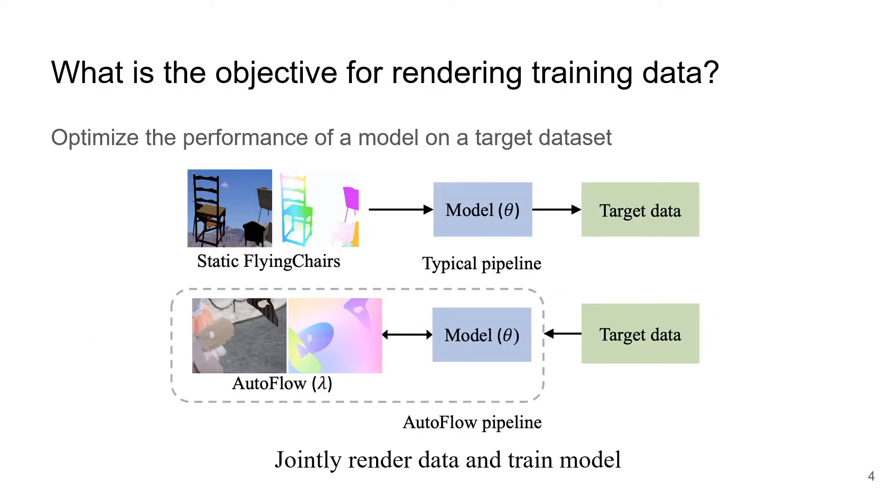In this paper, we ask: what is the objective for rendering training data? Our answer is to optimize the performance of a model on a target dataset. Specifically, we introduce AutoFlow, which jointly renders data and trains a model to optimize the model's performance on the target dataset. The dataset is generated according to hyperparameters lambda, and the model parameter theta are jointly optimized for target performance.